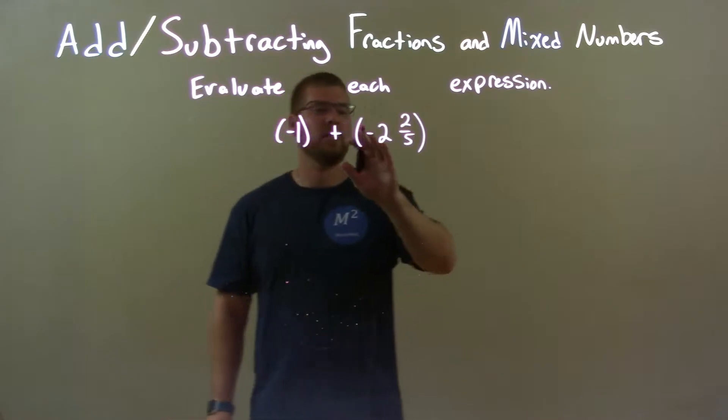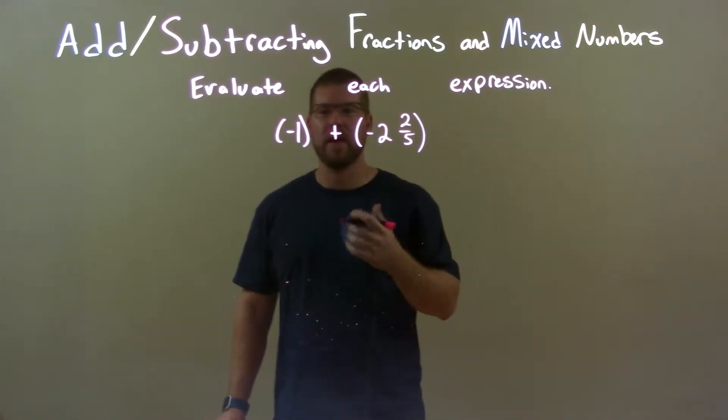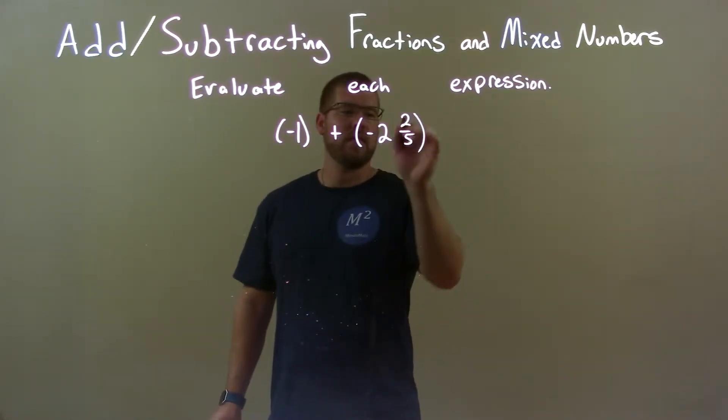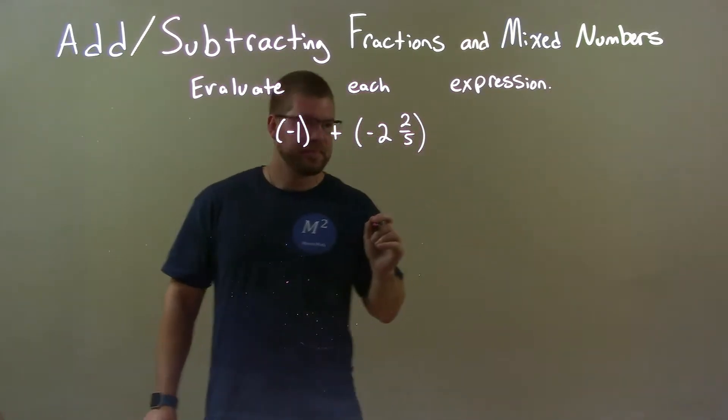Since these are both negative, we know we're going to a more negative number. Now, here, we have the whole number and then the fraction part, right?